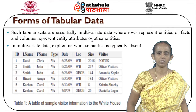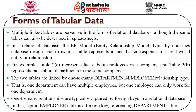In multivariate data, explicit network semantics is typically absent. Multiple linked tables are pervasive in the form of relational databases. In a relational database, the ER model (entity relationship model) typically underlies database design. Each row in a table represents a fact corresponding to a real-world entity or relationship. For example, one table represents facts about employees and another represents facts about departments, linked by a one-to-many department-to-employee relationship — one department can have multiple employees, but one employee can only work for one department. One-to-many relationships are typically captured by foreign keys.